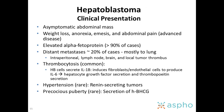Hepatoblastoma presents usually as an asymptomatic abdominal mass. It can present with weight loss, anorexia, emesis, and abdominal pain. AFP is elevated in greater than 90% of cases. Around 20% of cases have metastatic disease, which is usually intraperitoneal, in the lymph nodes, in the brain, or as local tumor thrombus.